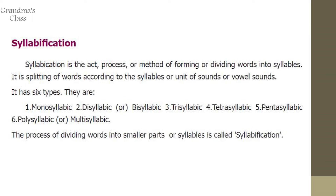The six types are: monosyllabic, which means single syllable; disyllabic or bisyllabic, which means two syllables; trisyllabic, which means three syllable words; tetrasyllabic, which means four syllable words; pentasyllabic, which means five syllable words; and polysyllabic or multisyllabic, which has six or more syllables.